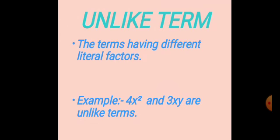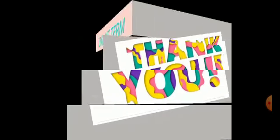Unlike terms: Terms having different literal factors are called unlike terms. For example, 4X² and 3XY are unlike terms. In 4X², the literal factors are X and X (written twice). In 3XY, the literal factors are X and Y. Since their literal factors are different, they are called unlike terms.